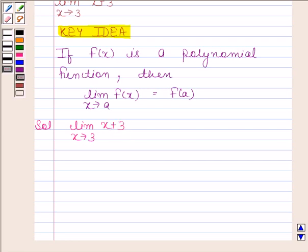So, by the key idea, the limit of x plus 3 as x tends to 3 is the value of x plus 3 at the point x equals 3.